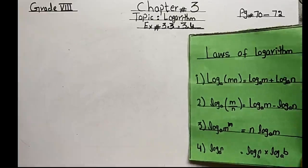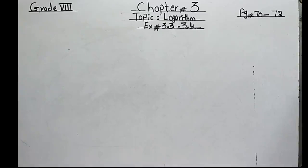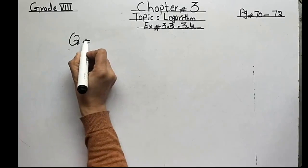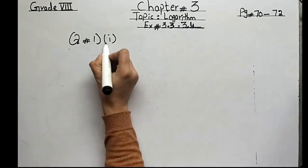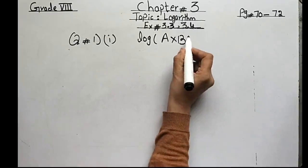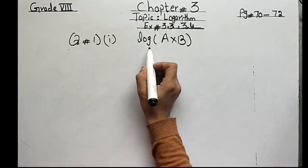We will solve exercise 3.3 according to these four laws. Now come to question number 1 on page 70. The question is: write the formula into the sum or difference. The first part is log of A multiplied by B, where A and B are multiplied.